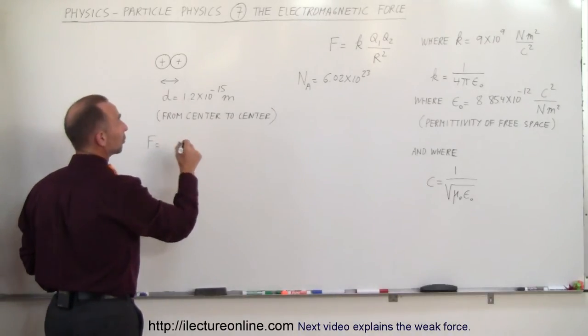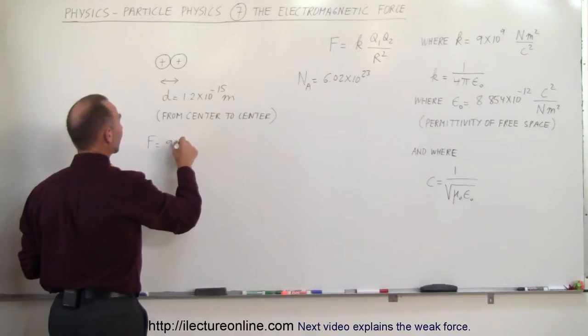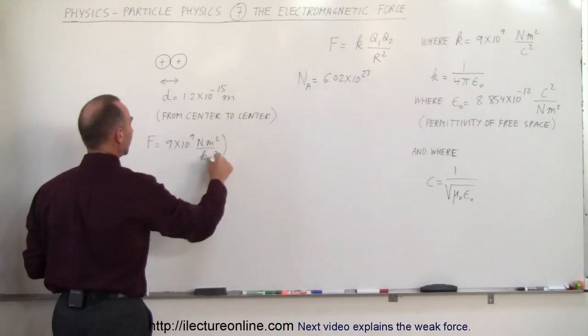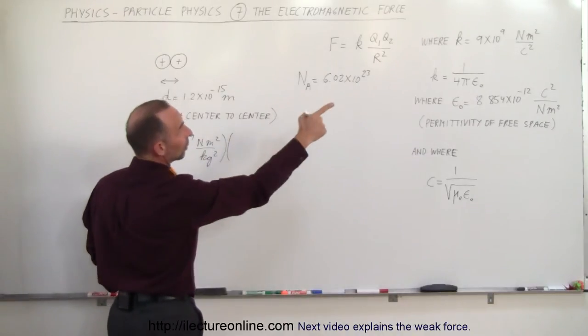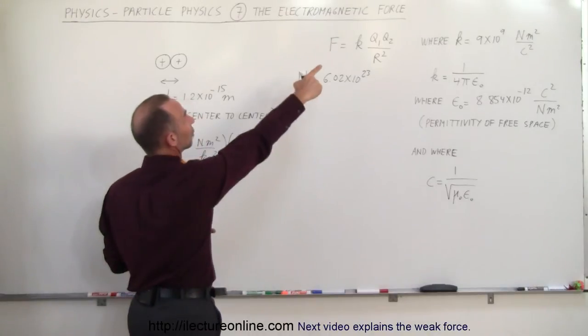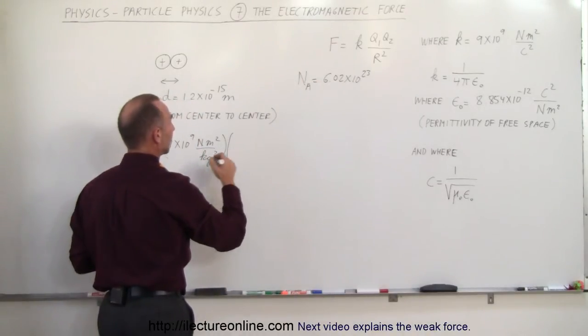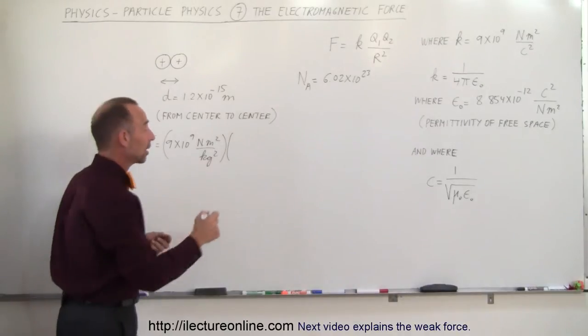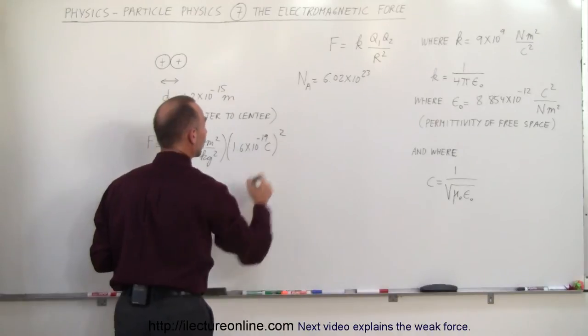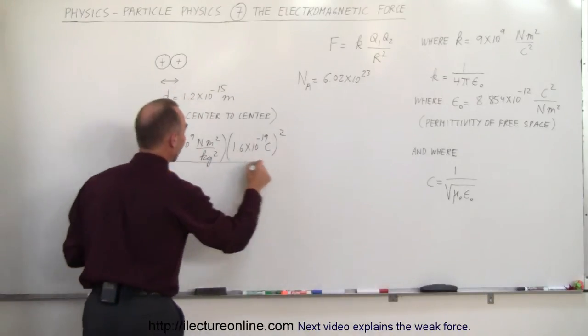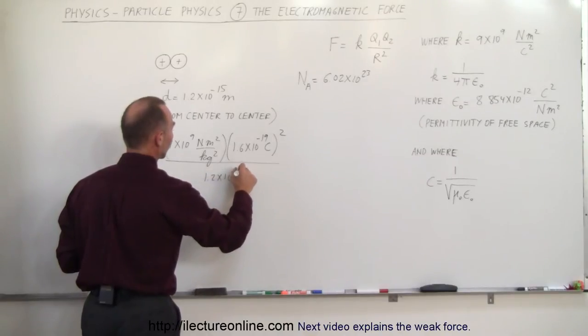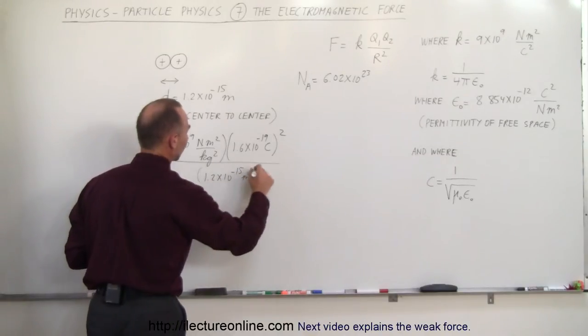Using Coulomb's law, the force is equal to K, which is 9 times 10 to the 9th newtons meters squared per coulomb squared, multiply that times the product of the charges. The charge of a single proton or single electron is 1.6 times 10 to the minus 19 Coulombs, and since we have to multiply the two, it's like squaring that. Divided by the distance between them squared, which is 1.2 times 10 to the minus 15 meters, and we have to square that.